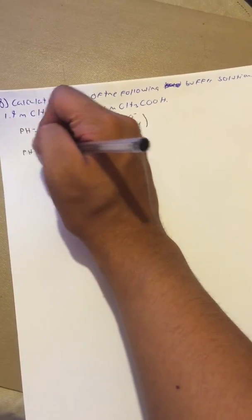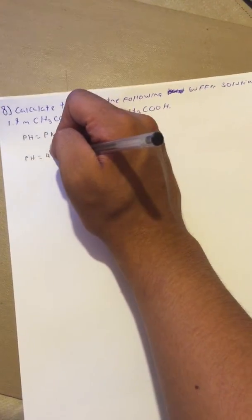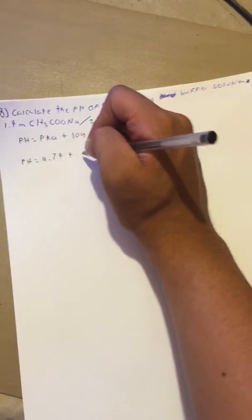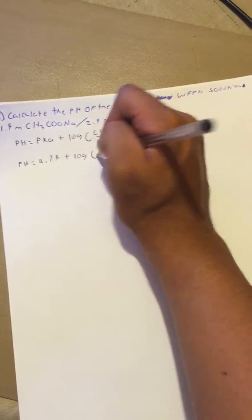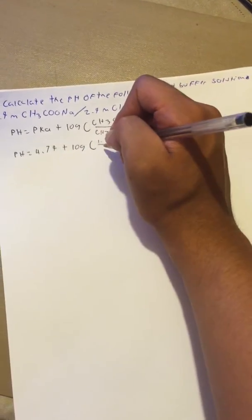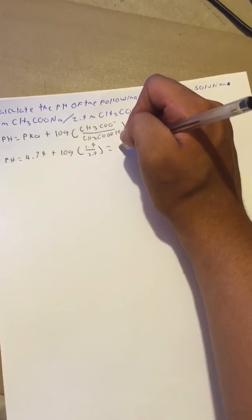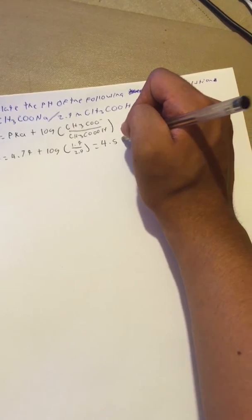pH is going to be equal to 4.79 — that is the pKa — plus log of 1.9 over 2.9, which is going to be equal to 4.56.